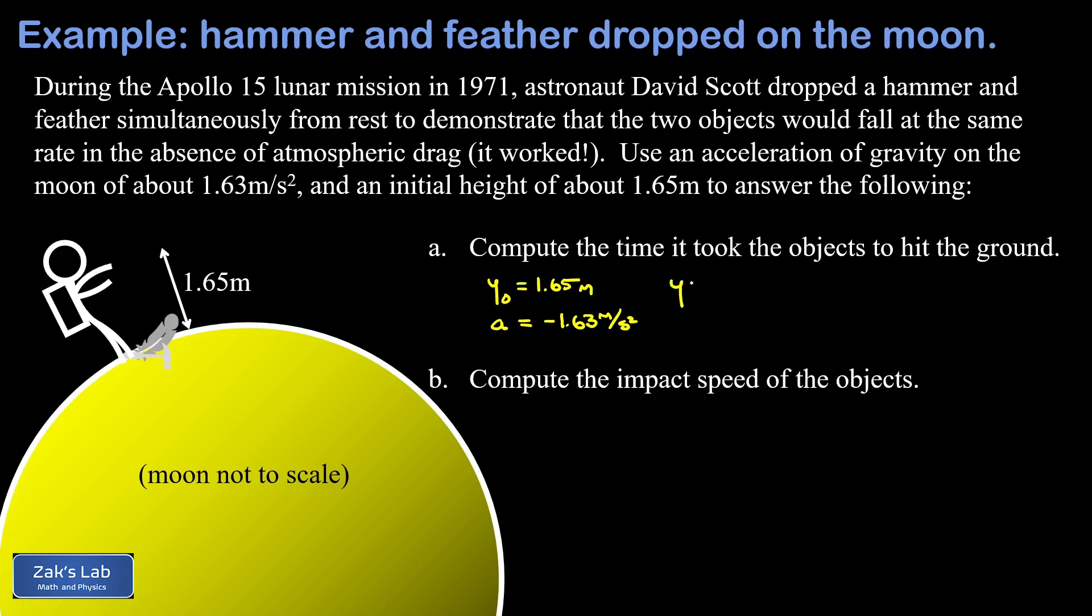Now we can look at the kinematics equation that describes the y-coordinate as a function of time. So that's y equals y-naught plus v-naught t plus one-half at squared. In our final y position, because these hit the ground, that's going to be zero.